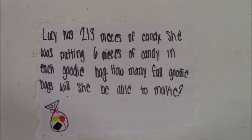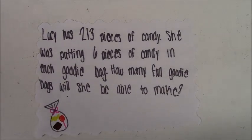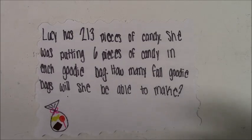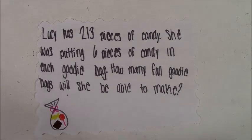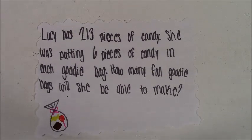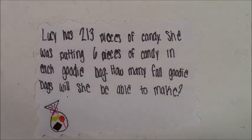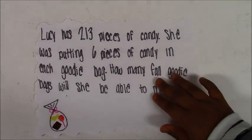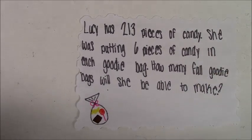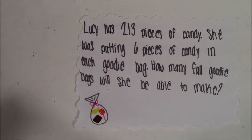We will now show you the word problems that go along with the four main ways to use a remainder. Lucy has 213 pieces of candy. She was putting six pieces of candy in each goodie bag. How many full goodie bags will she be able to make? If you want some extra practice, you can pause the video and try out the word problems.